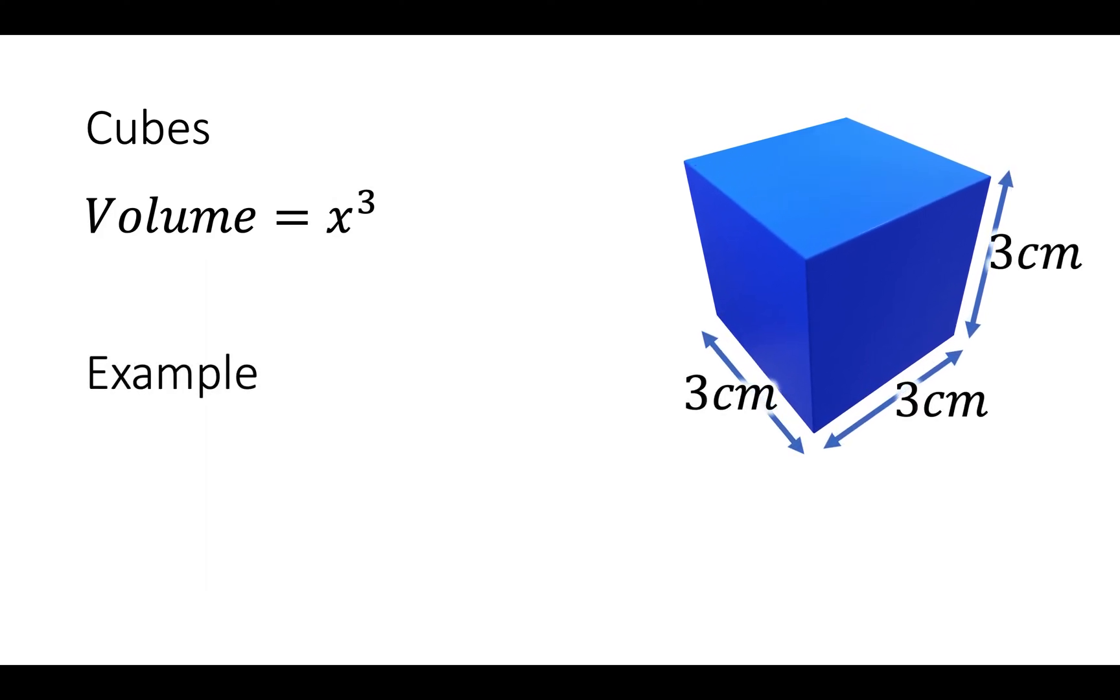Let's see an example. So we've got this cube which is 3cm by 3cm by 3cm, which is 3 times 3 times 3, which is 27cm cubed. And that's the final answer. Remember the units for all of these questions. Put the units on the end, otherwise you will lose some marks.